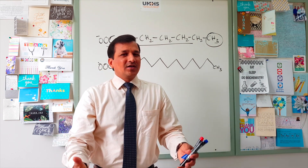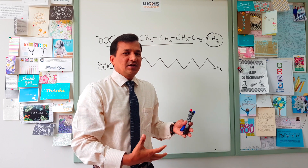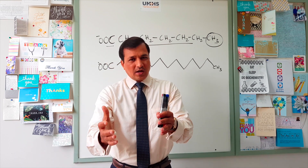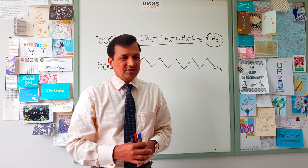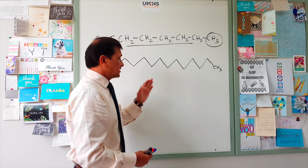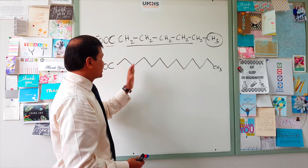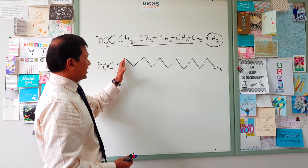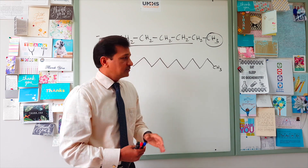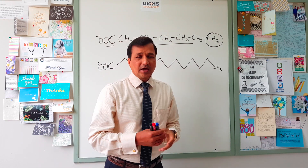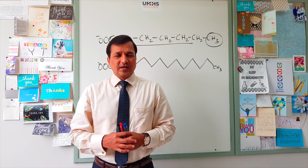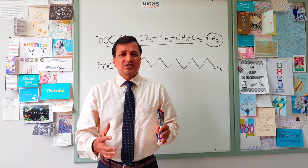Depending on the number of carbons present in a fatty acid, we can classify fatty acids. Majority of the time a fatty acid is written in shorthand notation — the carboxyl group is at one end, every bend you see represents a carbon atom, and it ends as a methyl group. Now the first classification of fatty acid is based on the number of carbons or double bonds present.